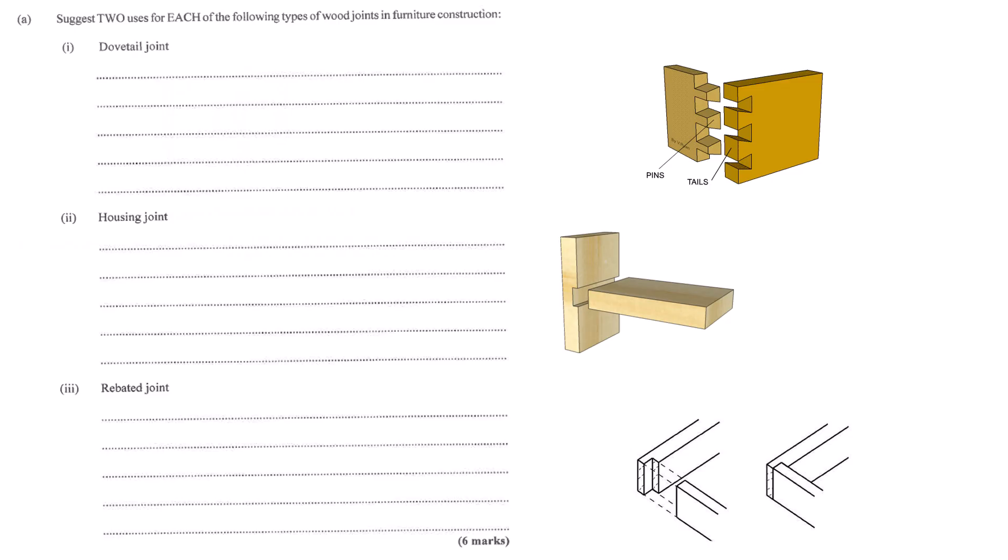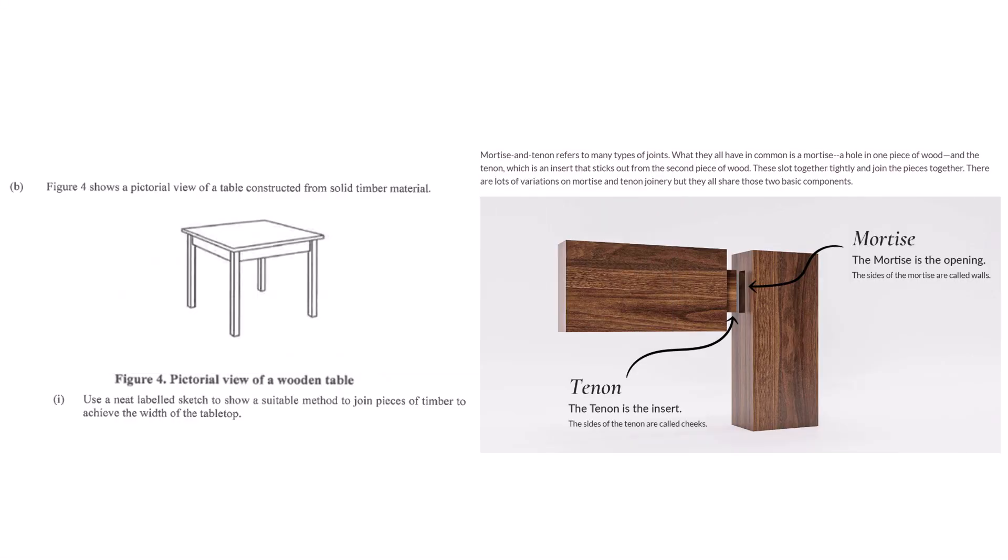Now the big one - mortise and tenon. It's incredibly strong and has been used for centuries. It's basically a hole and peg system. The mortise is the hole or slot, usually rectangular, cut into one piece. The tenon is a tongue or projection carefully shaped on the end of the other piece to fit exactly into the mortise. It needs to be precise for strength. You apply glue, fit them together, clamp it, and you get a really robust joint. Fantastic for joining table legs to rails or frame components, even used to join boards together.